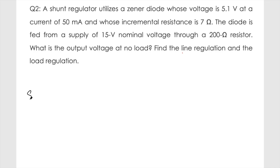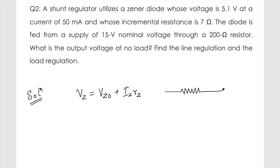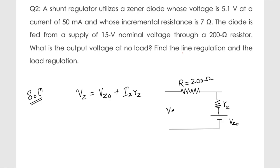To find the output voltage at no-load, we draw the circuit: a 200-ohm resistor R in series with the Zener diode modeled as rz and vz0, with vin of 15 volts applied. We use the equation vz equals vz0 plus iz times rz. Given that vz is 5.1 volts at iz equals 50 milliampere and rz equals 7 ohms.